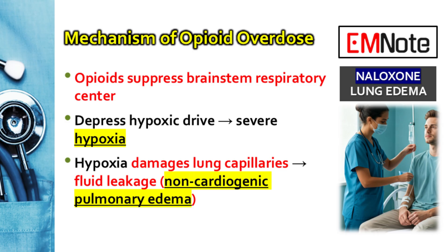To really get why FPE can happen, we have to look at what's going on with the patient's body during the overdose, before any intervention. It all starts with the opioids — they suppress the respiratory center in the central nervous system. This also dampens the body's natural trigger to breathe when oxygen gets low. Because of this, the patient becomes severely hypoxic — a major lack of oxygen. This hypoxia actually starts to injure the tiny capillaries in the lungs, and they begin to leak. So the initial damage is already there before naloxone even enters the picture.